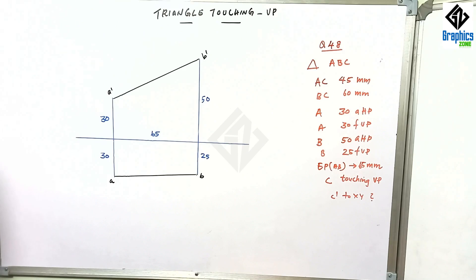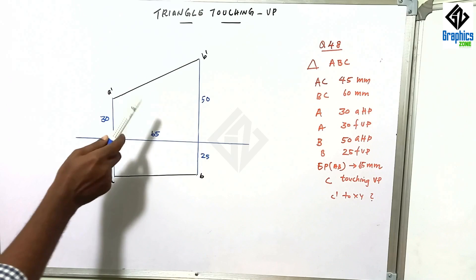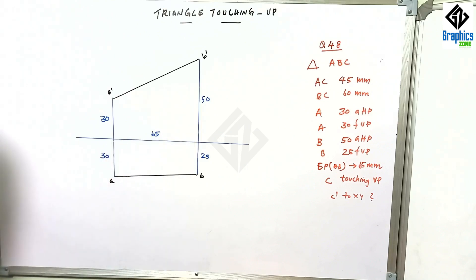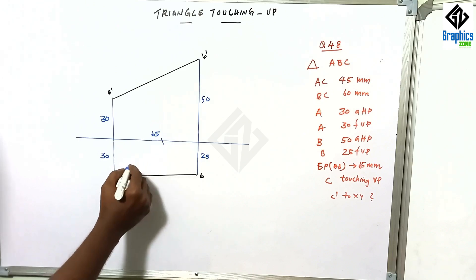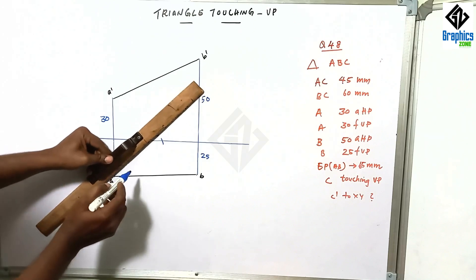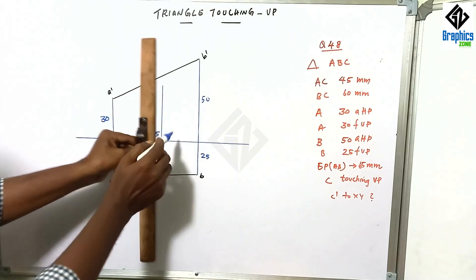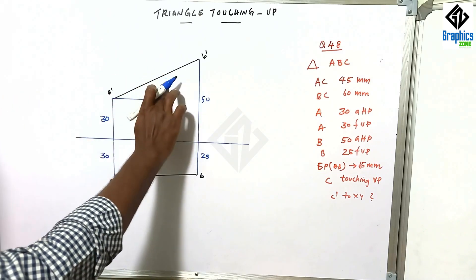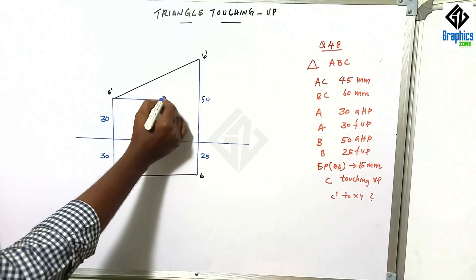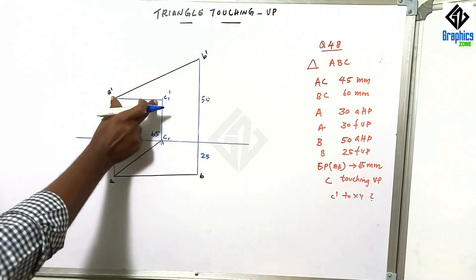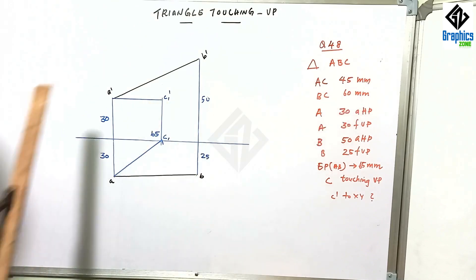The length of AC is 45, so this is 45. The length of BC is 60mm. The length of AC on the layer is the same, AC is 45, BC is 60mm.